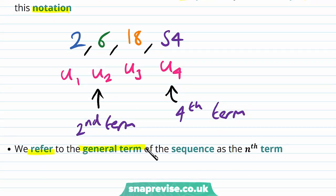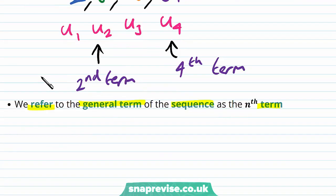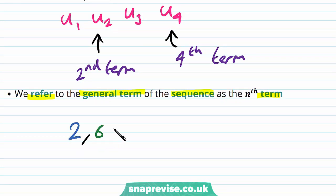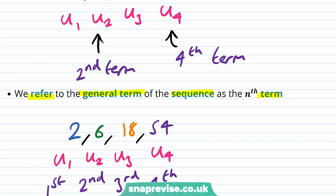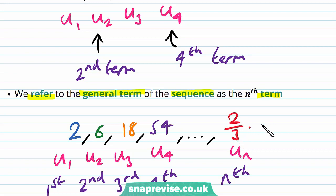We refer to the general term of the sequence as the nth term. So in this case with the 2, 6, 18, 54 geometric sequence, we have u₁, u₂, u₃ and u₄, which correspond to the first, second, third and fourth terms respectively. But then we go all the way up to u_n — this is our nth term. In this case this is the expression (2/3) multiplied by 3 to the power of n. So when n equals 1, we have (2/3) times 3 to the power of 1, the threes cancel out and we get 2, and so on for the other corresponding values u₂, u₃ and u₄.